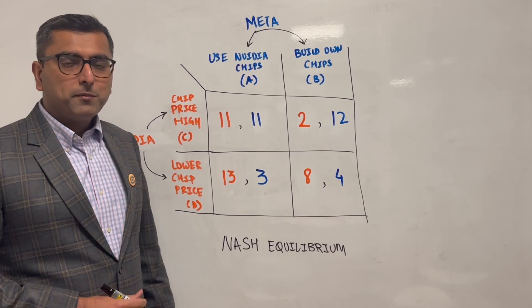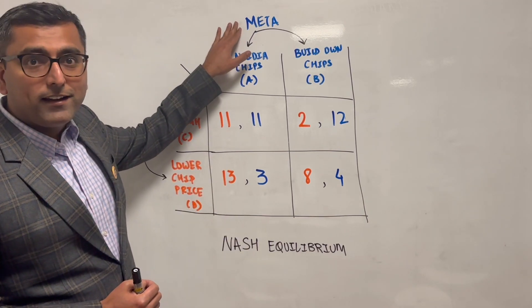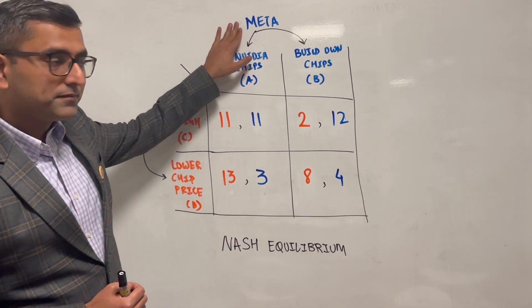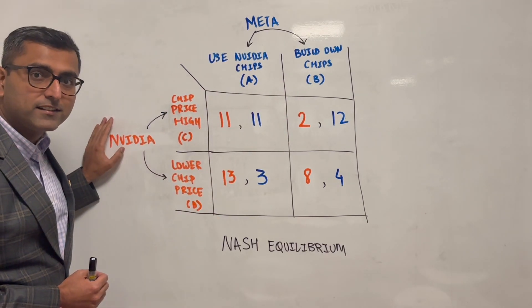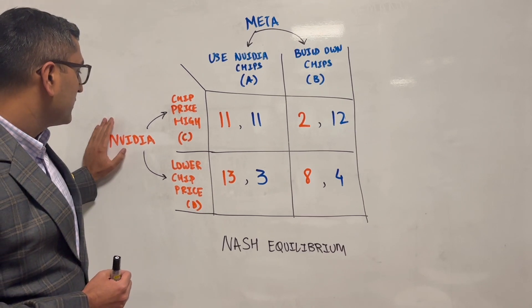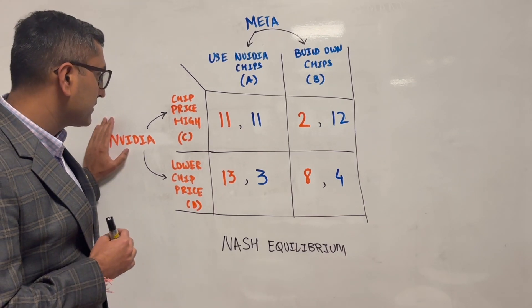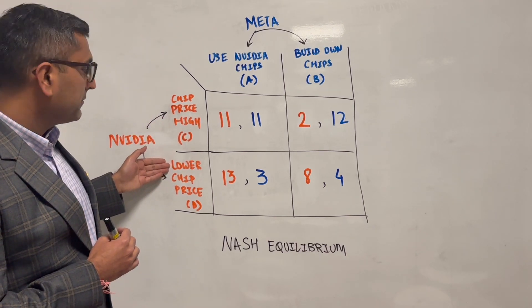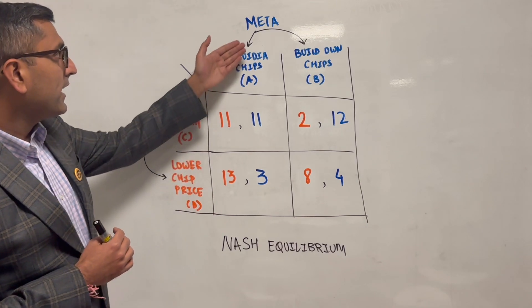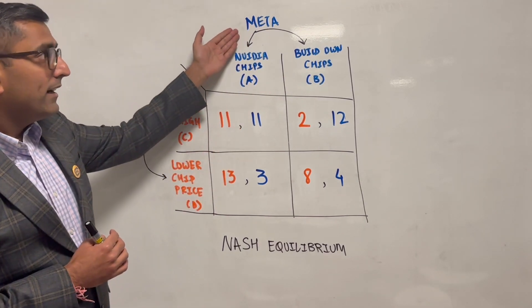Let's learn about Nash equilibrium with a real-life example. We have Meta or Facebook as a company who has two choices in front of it, and we have Nvidia who's really good at building high-performing chips and they also have two choices in front of them: choice C and choice D. Meta has choice A and choice B.